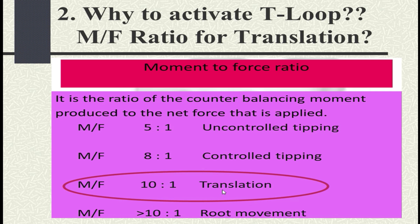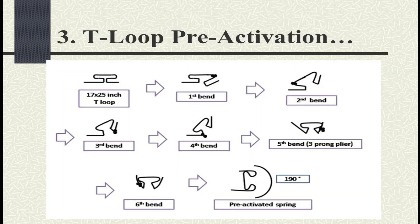We need one gram-force for movement of the crown, then 10 times counter-balancing moment for translation — meaning for bodily movement the moment-to-force ratio is 10:1. If we want root movement, the ratio should also be greater than 10:1. We activate the loop because we want more uprighting, and in cases where the canine is distally tipped or the molar is mesially tipped, you can vary the alpha and beta bends for desired tooth movements.